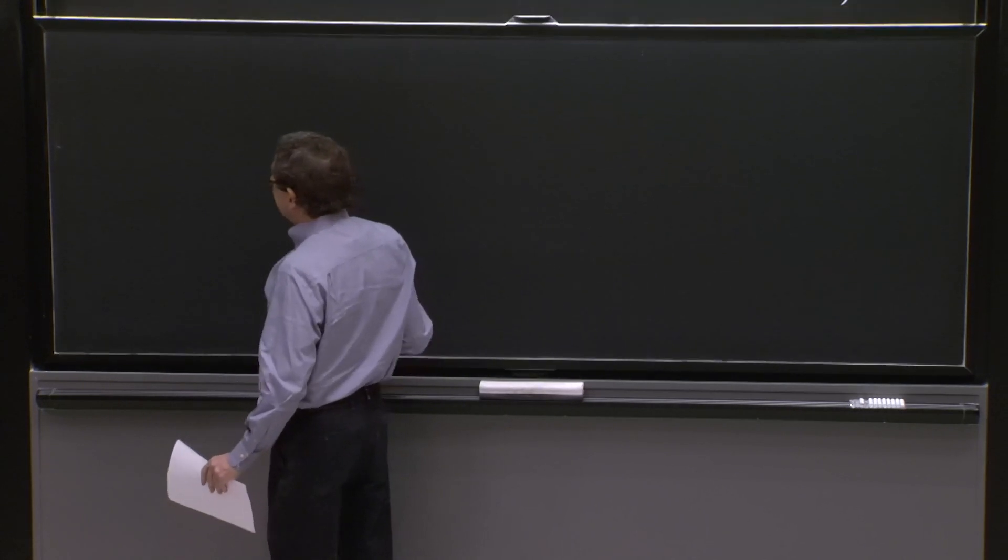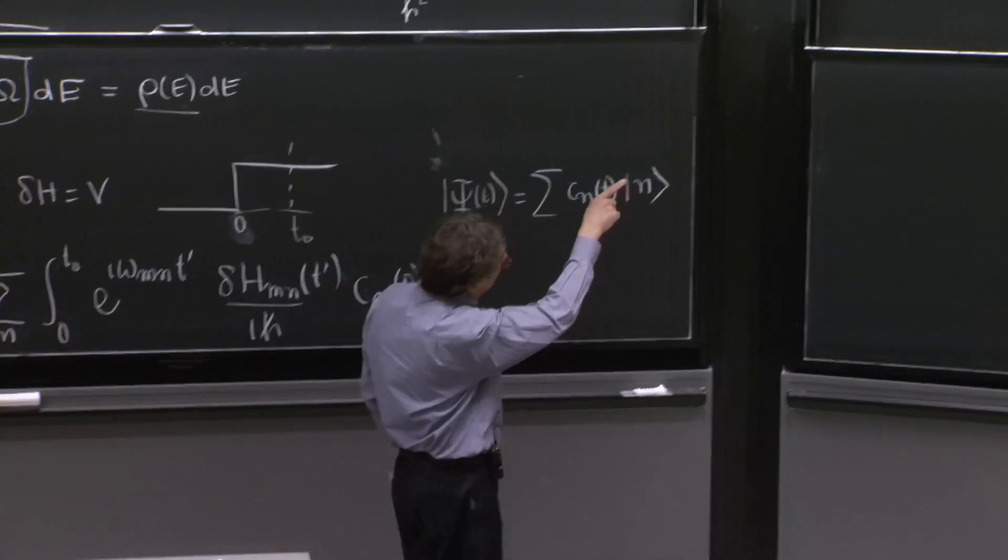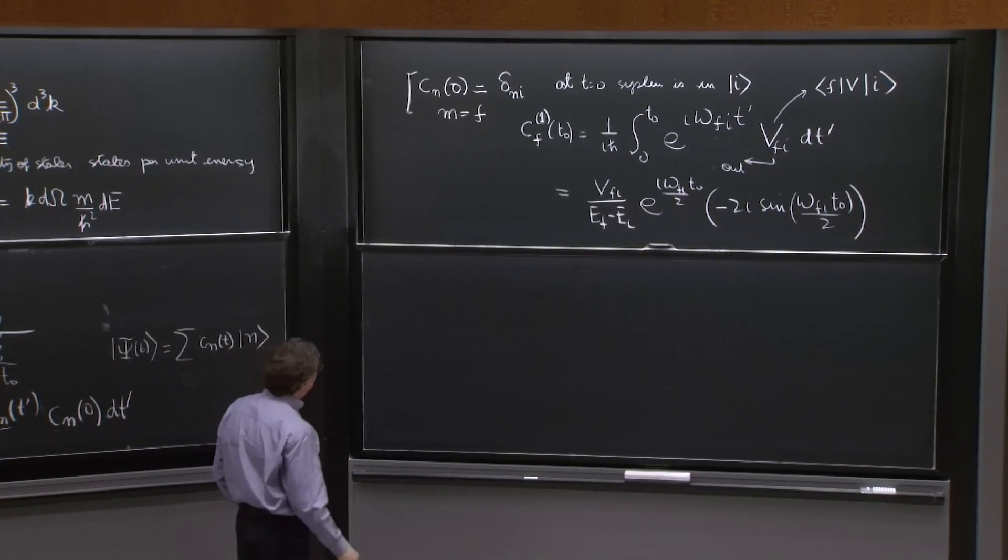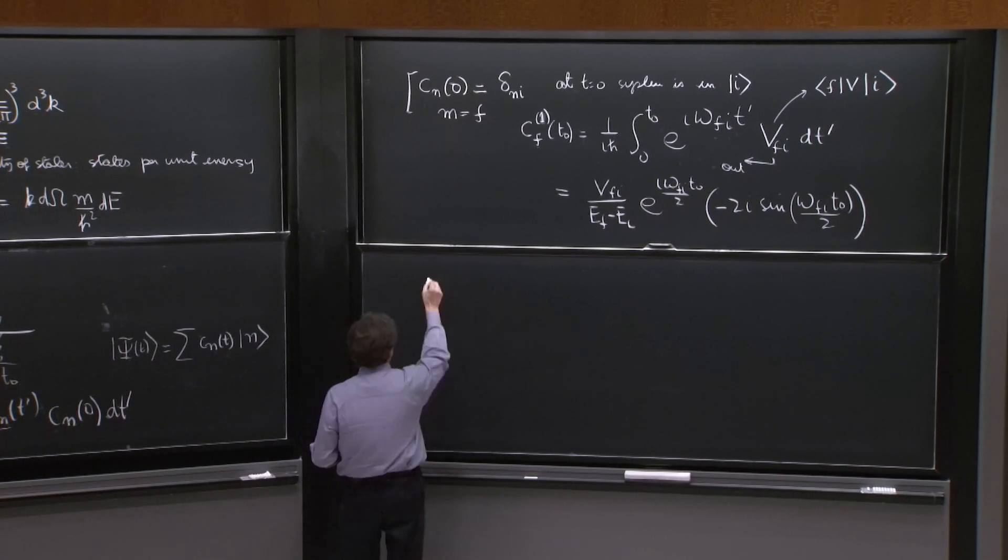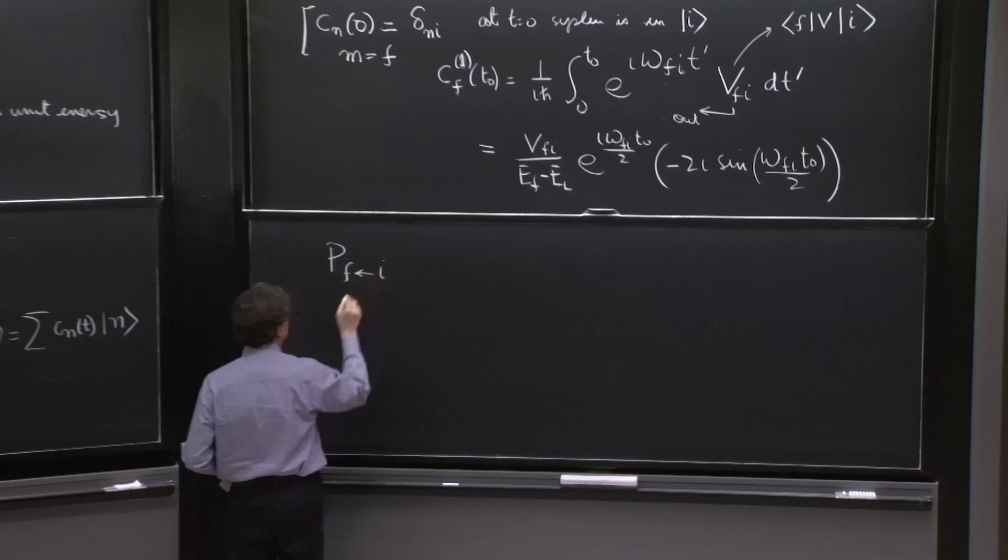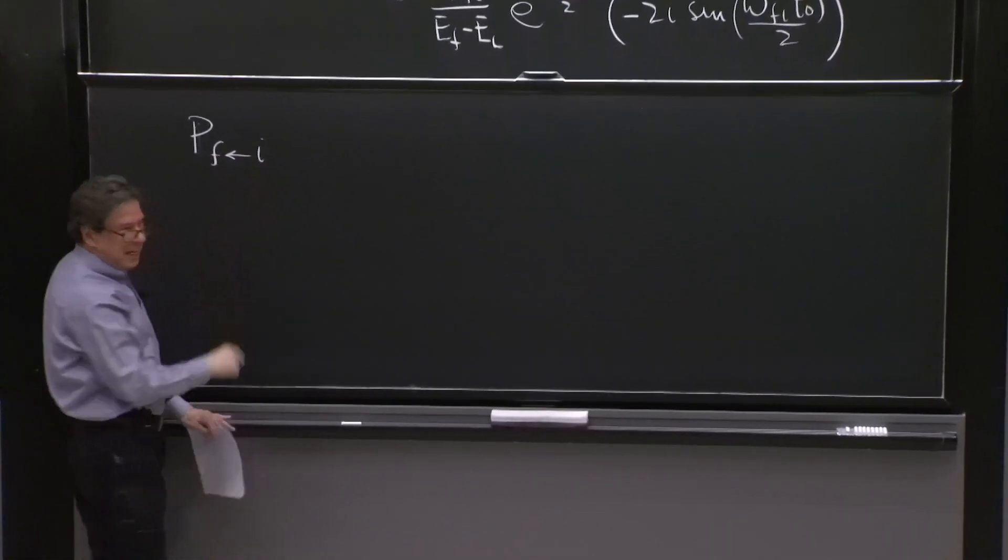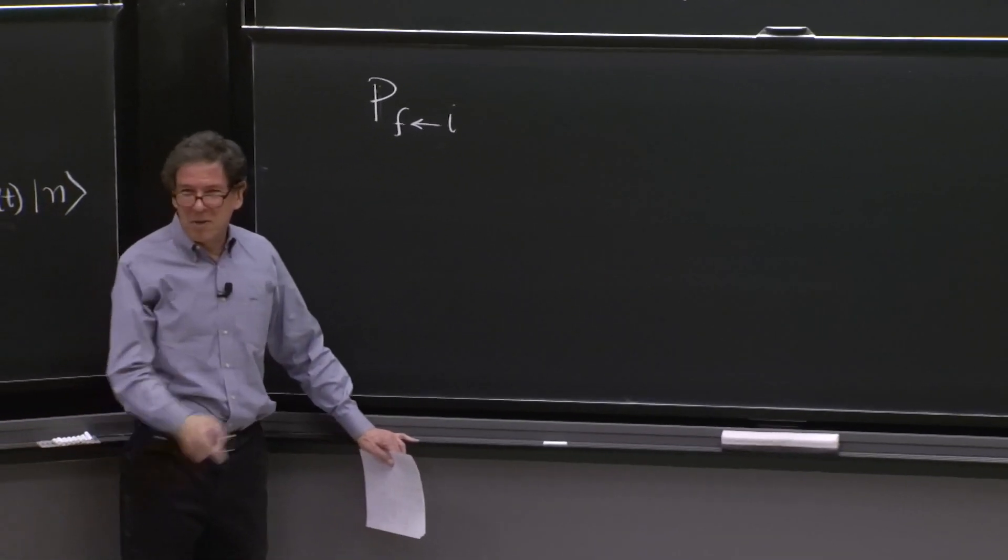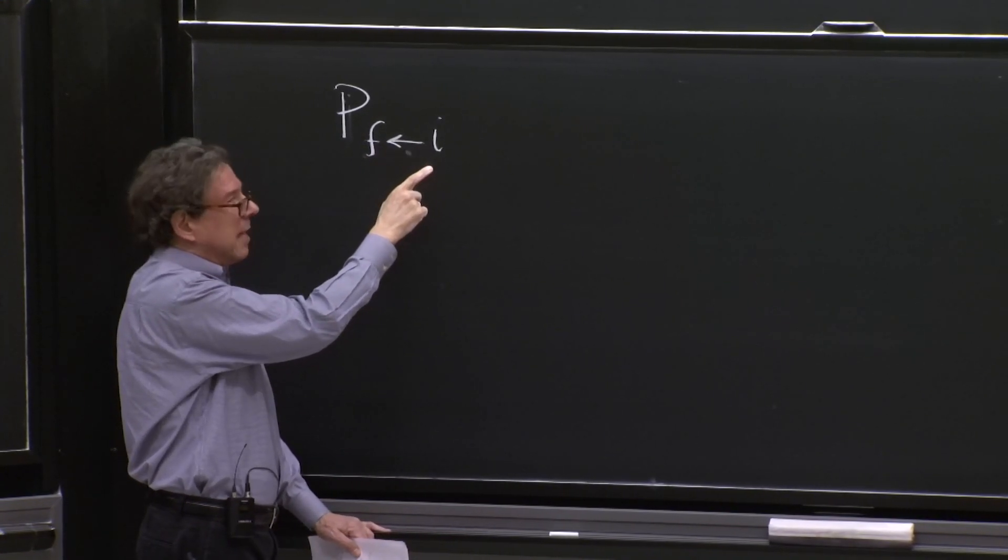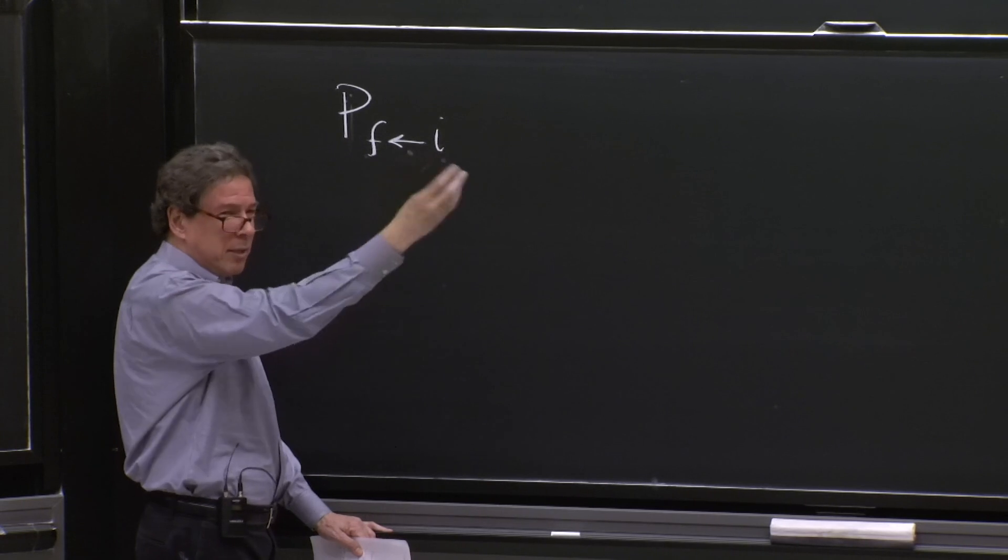So we can now compute the transition amplitude to go from, or transition probability, to go from the initial to the final state. So we'll write it like this. i to f. It's a little funny. I don't know. You can write it whichever way you want.